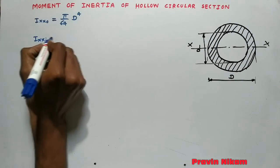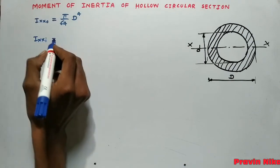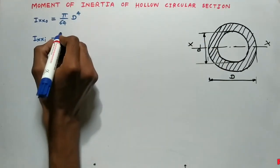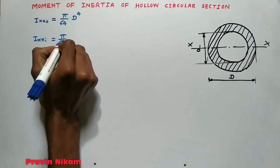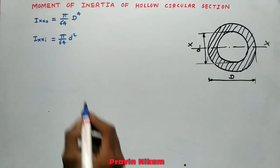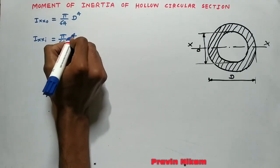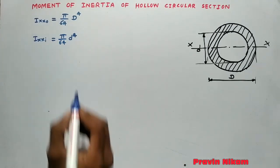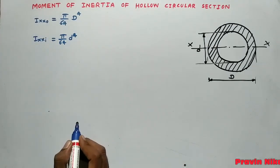Now forget the outer circle and only consider the small circle having diameter small d. For that circle, the moment of inertia about the centroidal axis is equal to π/64 × d⁴.